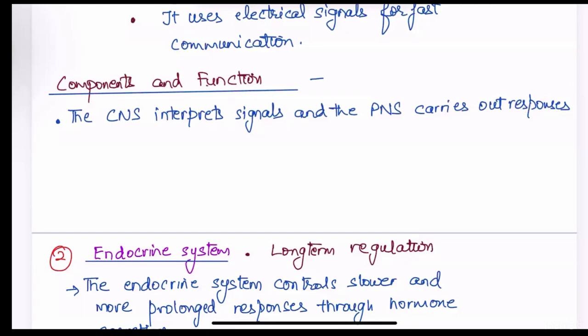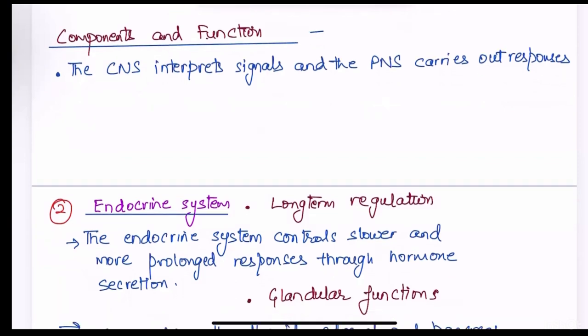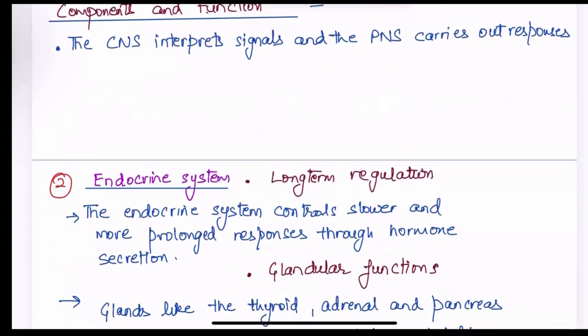If, for example, by mistake a person touches a hot object, a signal goes to the brain and from central nervous system, a signal goes back again to the hand to withdraw from that particular object. This is how central nervous system and peripheral nervous system work in coordination with each other.